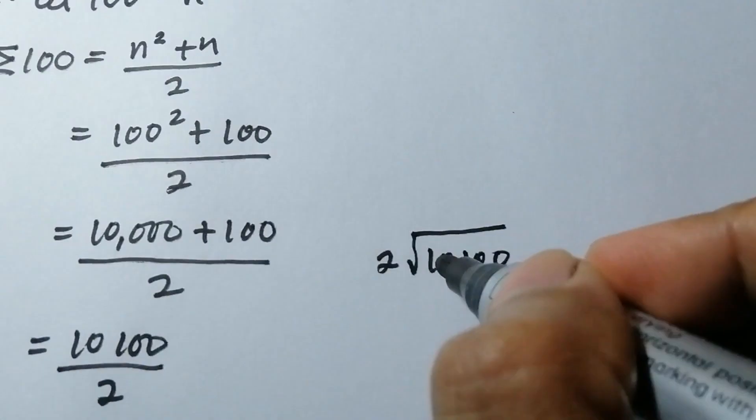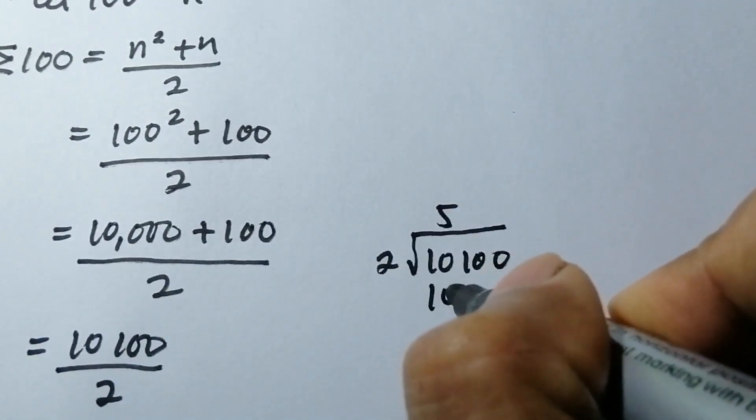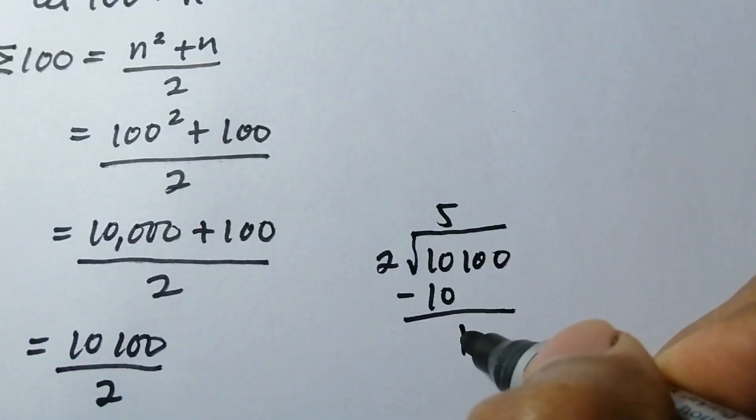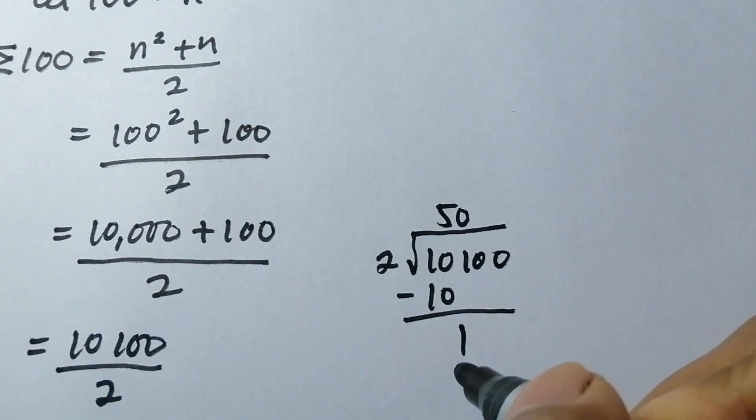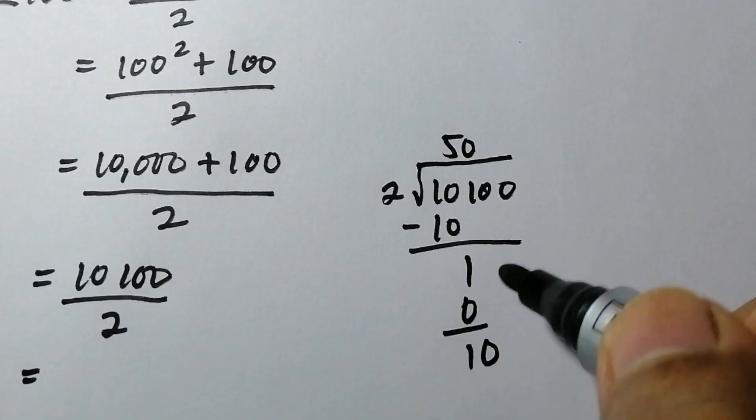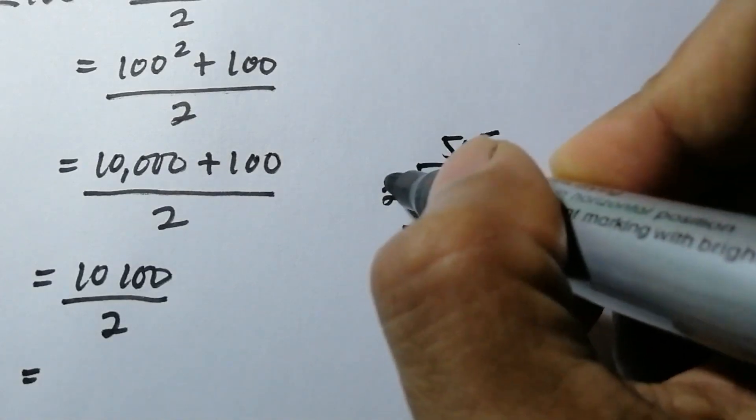Let's divide. 10 divided by 2 is 5, 5 times 2 is 10, minus 1. 1 divided by 2 is 0, 0 times 2 is 0. Bring down 0, so 10 divided by 2 is 5, 5 times 2 is 10.